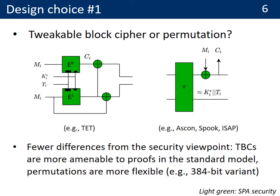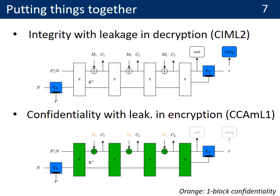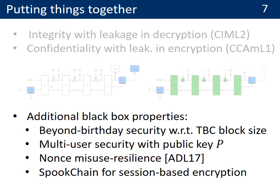This choice of security target leads to one main design question: should we use a tweakable block cipher or a permutation for the message processing part? These two options are actually quite similar in terms of security and overheads. Tweakable block ciphers are more amenable to proofs in the standard model, while permutations provide more flexibility with their capacity and rate. We use permutations for this purpose in order to easily generate different instances of Spook. Putting things together, the two figures on this slide show the Spook design and its requirements to reach CIML2 and CCAML1 security. Spook also has interesting features from the black box security viewpoint: beyond-birthday security, multi-user security with the public key P, nonce-misuse resilience, and the Spook chain mode for session-based encryption.